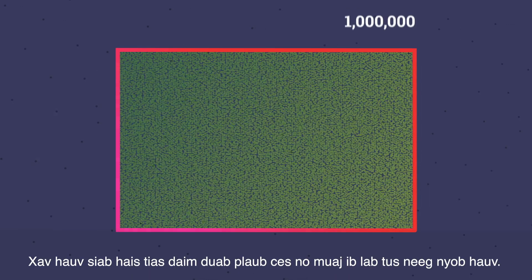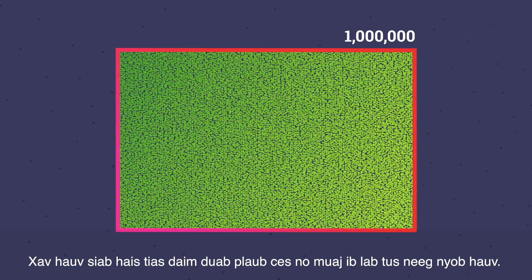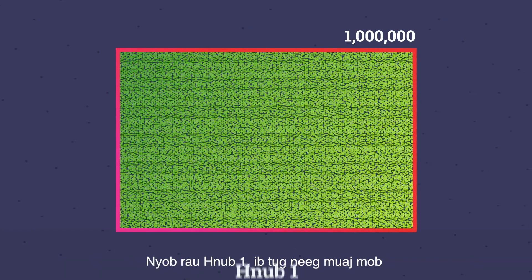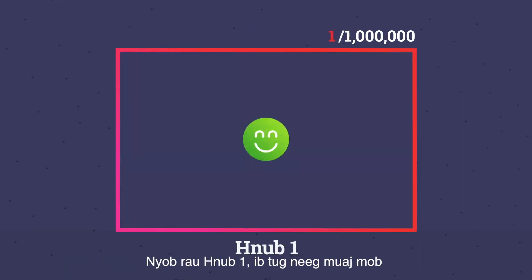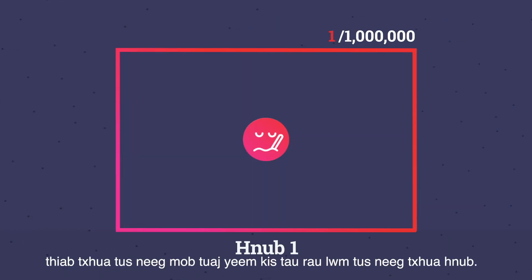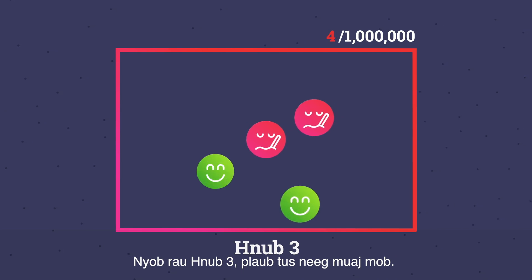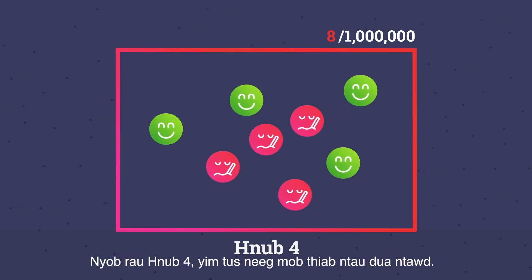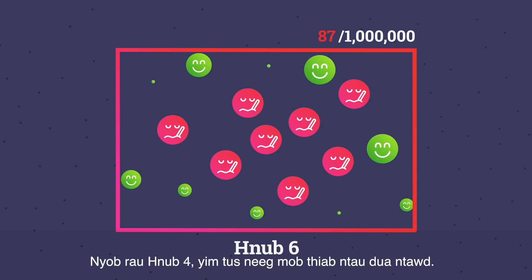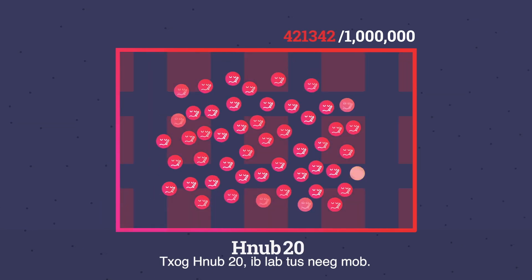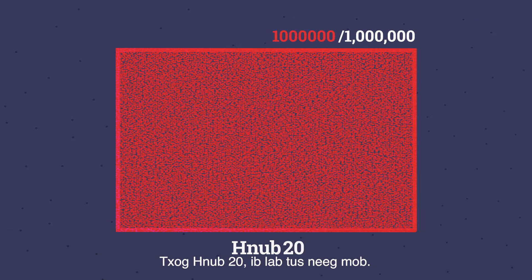Imagine this rectangle has one million people in it. On day one, one person is sick, and every sick person can spread it to one other person every single day. So on day two, two people are sick. On day three, four people are sick. On day four, eight people are sick. And so on. By day 20, one million people are sick.